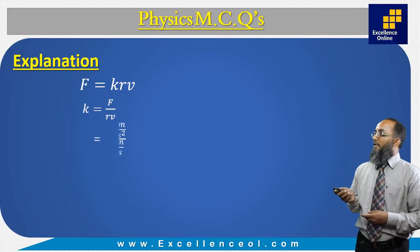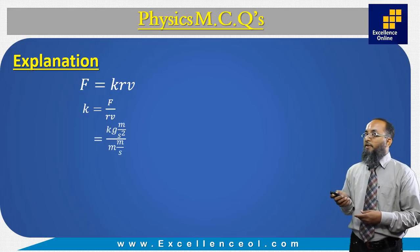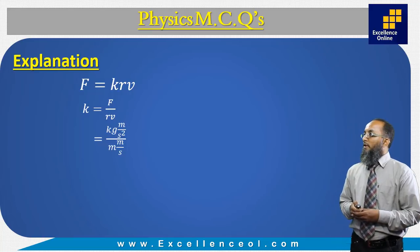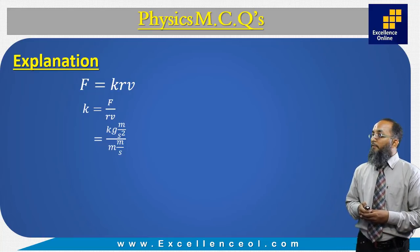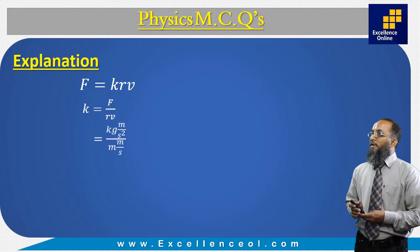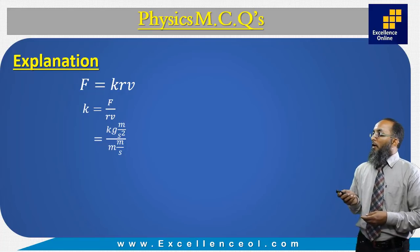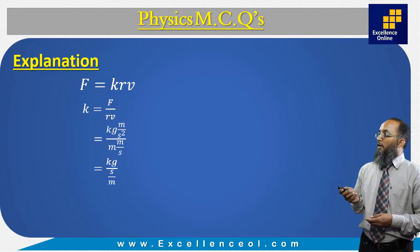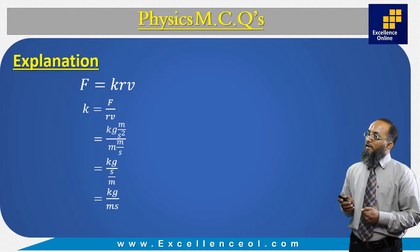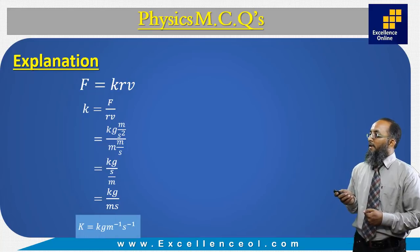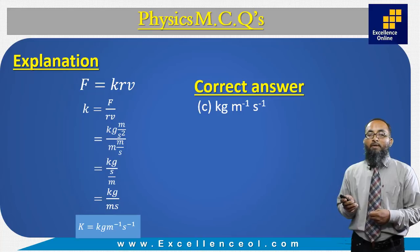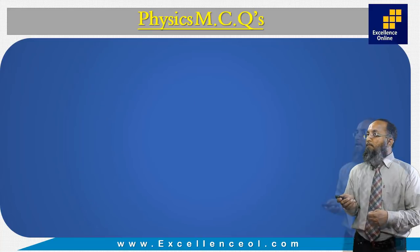It's a basic question — substitute the units of all quantities on the right-hand side into K. Force is kilogram meter per second squared, radius is meter, and velocity is meter per second. Solving this equation, we get kilogram per second. The correct answer is C: kilogram per second.